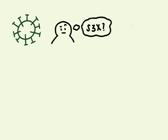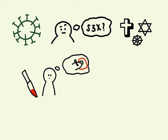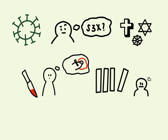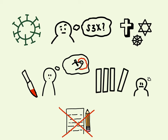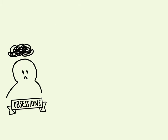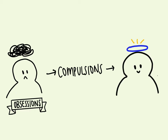Common obsessions include a fear of contamination and germs, unwanted taboo thoughts involving sex or religion, as well as aggressive thoughts towards self or others. Another obsession includes symmetry and ordering, where they want things to be organized in a particular way. These can get overwhelming quickly and can disrupt one at school or work. Obsessions are often alleviated by compulsions.